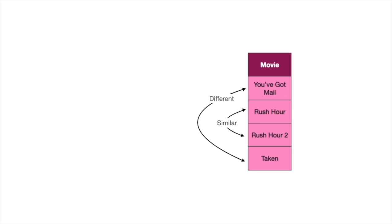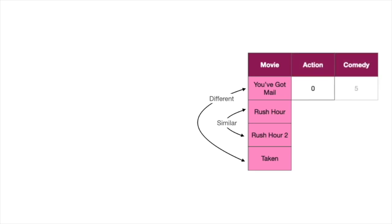Sometimes these features are found by the computer and are really hard for a human to decipher, but other times they can be interpreted by a human. For simplicity, let's say that in this embedding the features can be interpreted as action and comedy — pretty much a score for each one. The first number in the vector represents action and the second one comedy, and the scores for each movie are as follows.